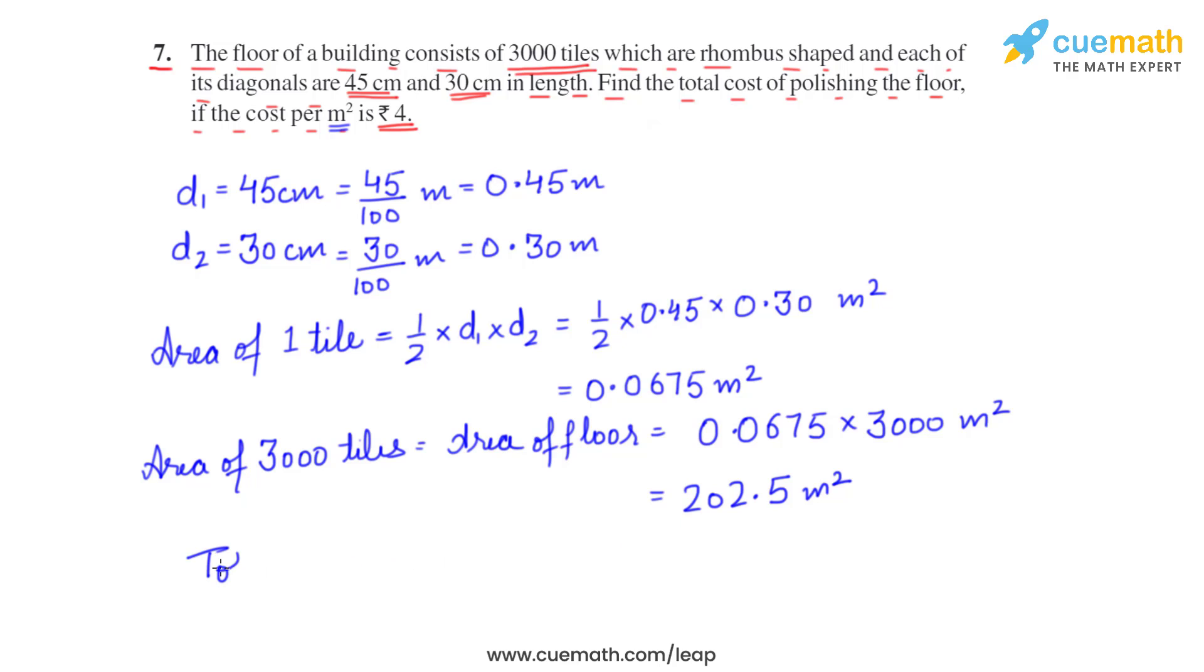Now the total cost will be the rate, that is Rs 4 per square meter, Rs 4 multiplied by total area, that is 202.5 square meters. The total cost comes out to be Rs 810. So Rs 810 is the total cost of polishing that floor which contains 3000 tiles which are rhombus shaped. So the answer is 810.